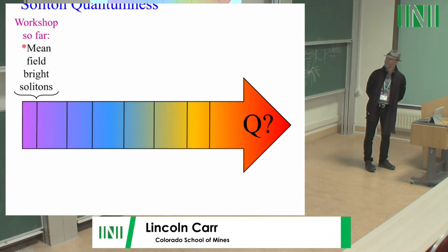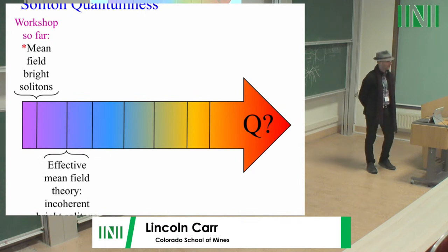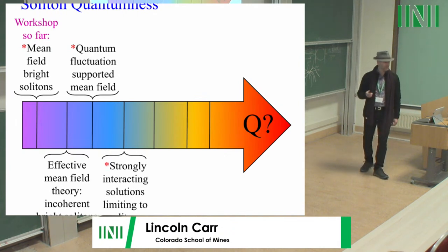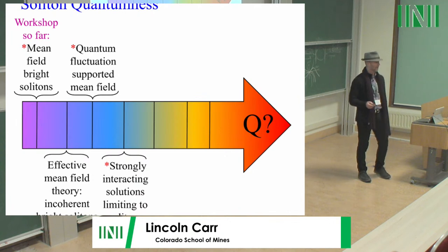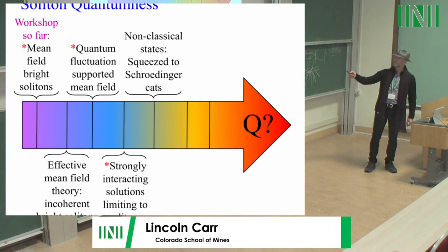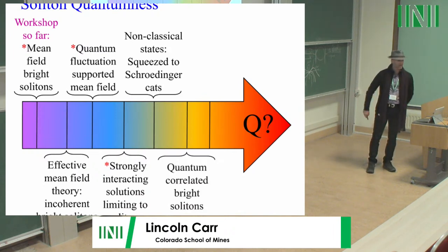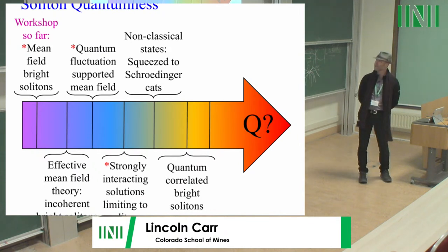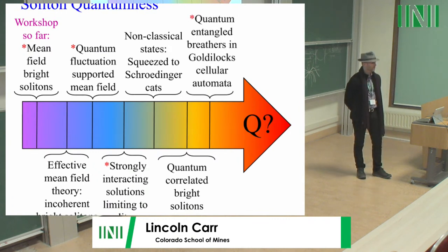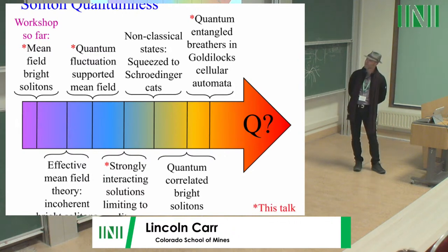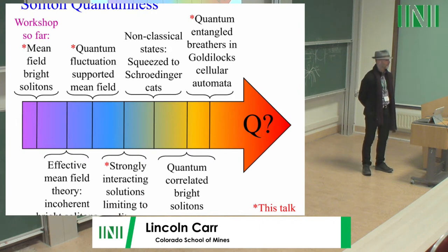In this workshop, we focused on what we will call mean field solitons. We can talk about effective mean field theory, which in the optics community gets called incoherent solitons — averaging over many modes. We can talk about quantum fluctuations supporting the mean field, which looks like higher order nonlinearities. We can talk about strongly interacting solutions limiting to solitons, squeeze states or non-classical states used to make solitons, and quantum correlated bright solitons, which is really the cutting edge of research in both condensates right now. And finally, what are we doing with solitons on quantum computers? I'll show some preliminary work with Goldilocks quantum cellular automata. In 30 minutes I can't cover everything, but I'll try to hit a few of these topics and then take questions.